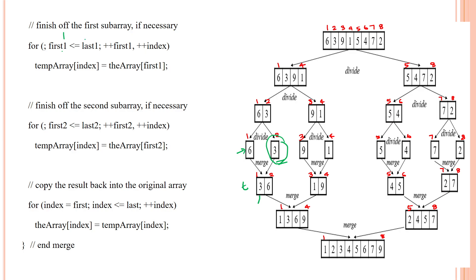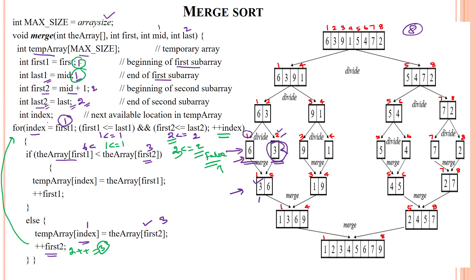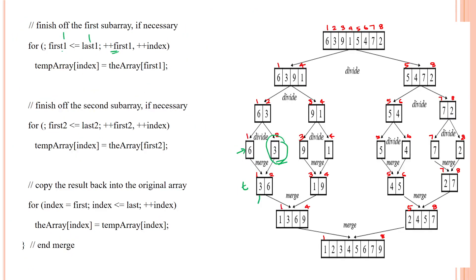Now we check the remaining first subarray: first index 1 is less than or equal to last index 1 — that is true. We increment the first index and copy the value at that index, which is 6, into the temporary array. So 6 is copied into the temporary array. The index value is incremented to 2, and 6 is placed at index 2 of the temporary array.